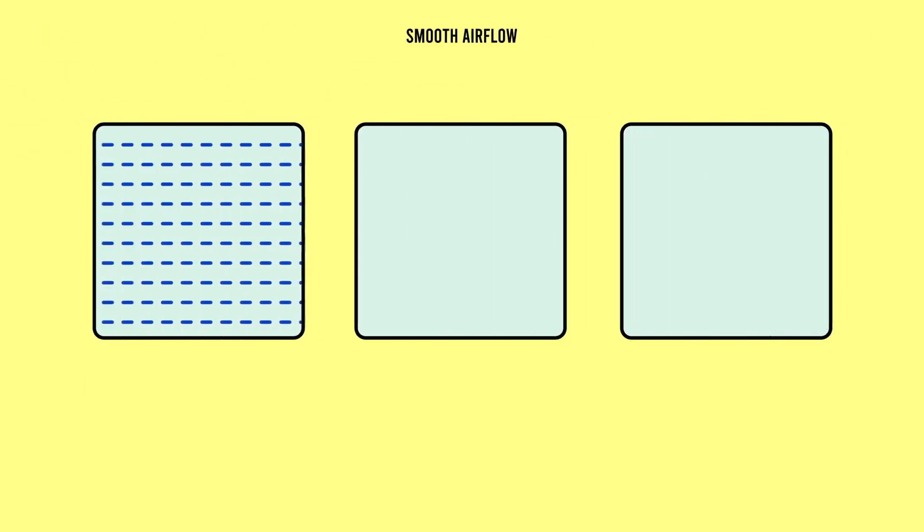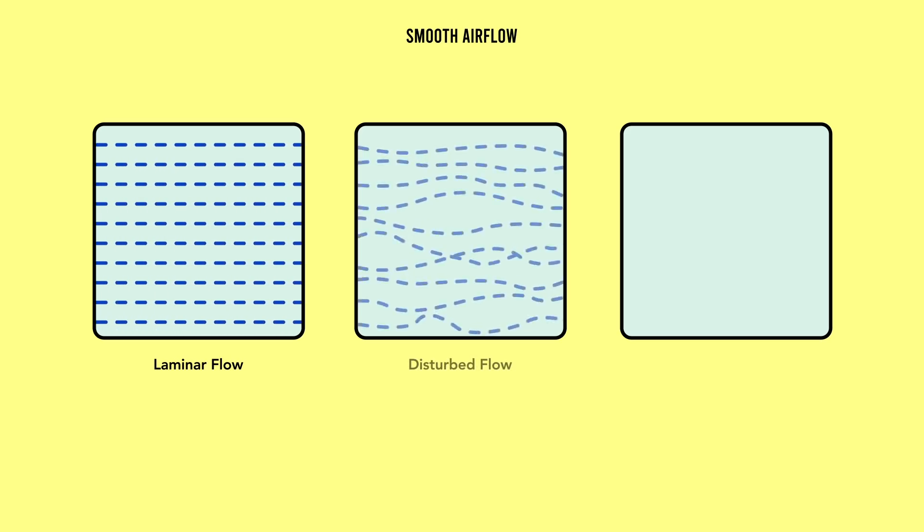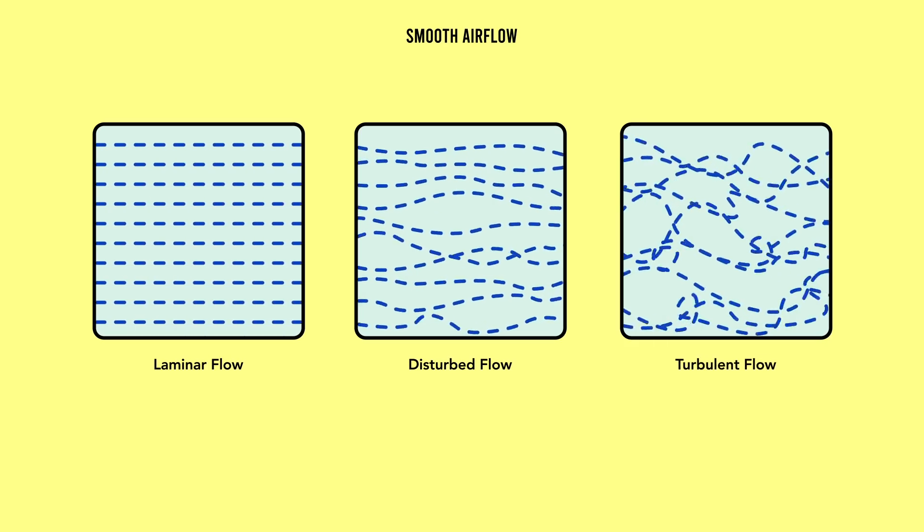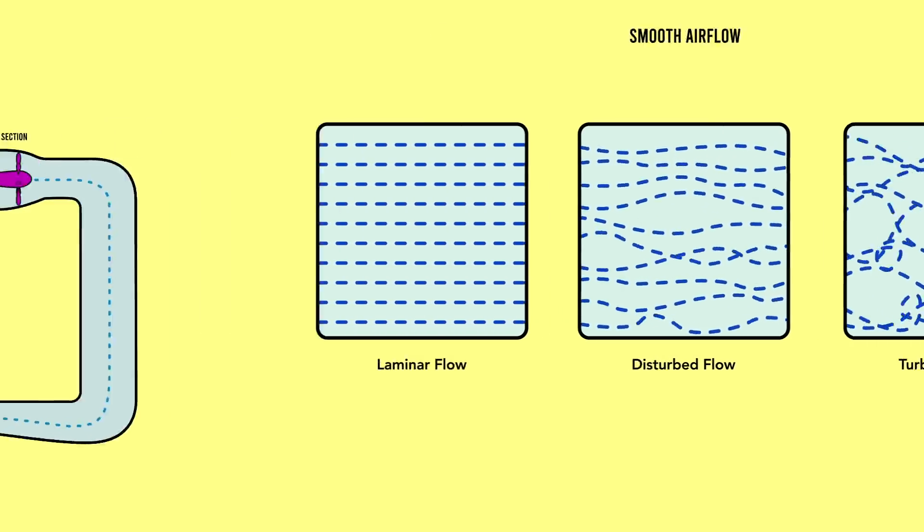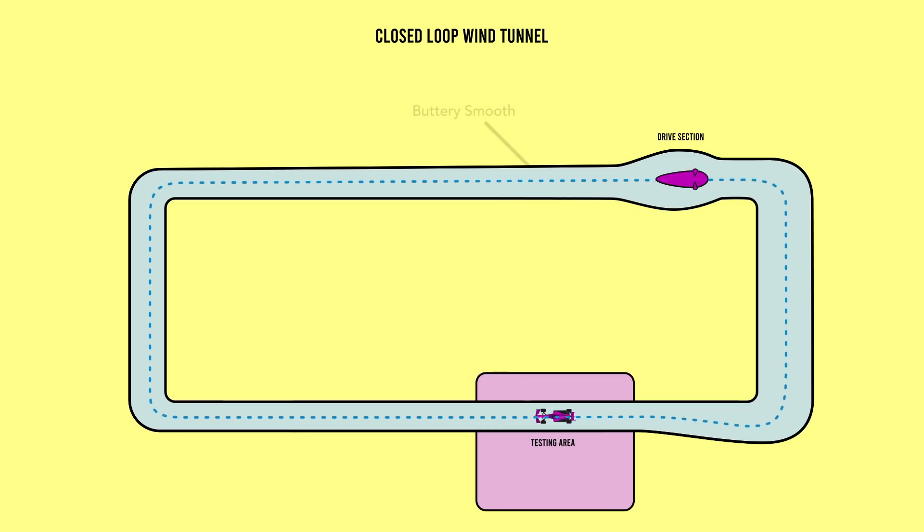Everything about the wind tunnel is designed to keep the airflow as smooth and predictable as possible. We're looking for laminar flow, where you can imagine the air travelling in smooth lines in the direction of the flow instead of disturbed with wibbles or messy with swirlies. I believe these are the technical terms. As such, the walls of the wind tunnel are as smooth as possible, so even the texture of their surfaces doesn't cause disturbances or vortices in the airflow.